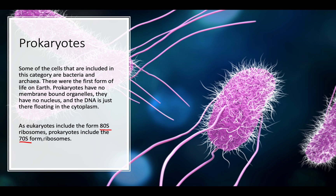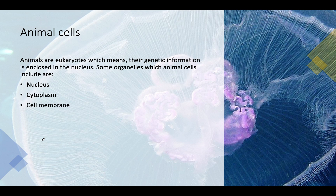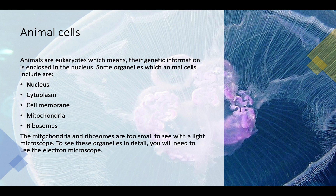Moving on to animal cells — animal cells are eukaryotes, which means their genetic information is enclosed in the nucleus. Some organelles that animal cells include are: the nucleus, which controls the cell's activity; the cytoplasm, where all the organelles are held and float around; the cell membrane, which controls what comes in and out; the mitochondria, where respiration occurs; and ribosomes, where protein synthesis occurs.